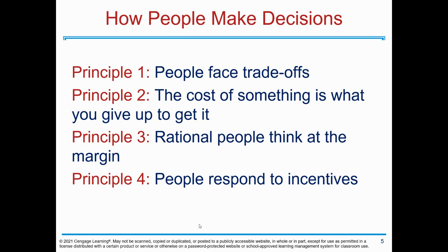The first four principles deal with how people make decisions, and they are: Principle one, people face trade-offs. Principle two, the cost of something is what you give up to get it. Principle three, rational people think at the margin. Principle four, people respond to incentives.